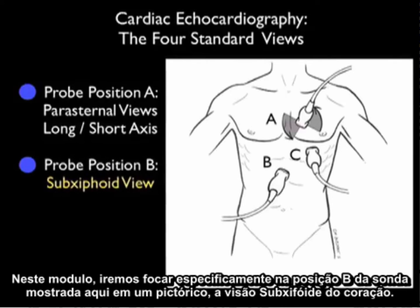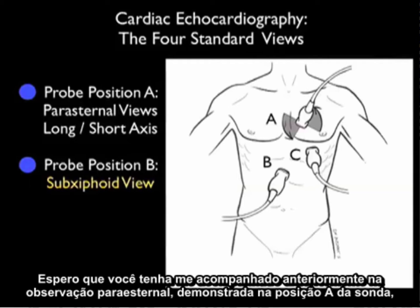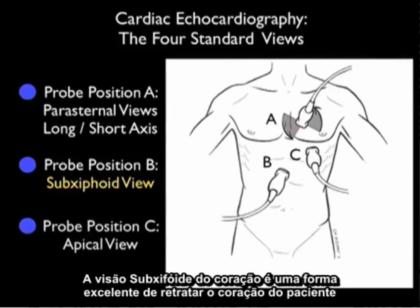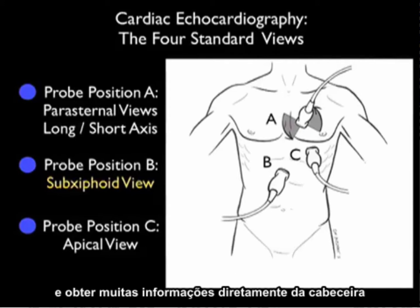In this module, we're specifically going to focus on probe position B as shown in the pictorial here — the subxiphoid view of the heart. Hopefully, you've joined me prior for the parasternal views shown in probe position A, and an upcoming module on the apical view shown in probe position C. The subxiphoid view of the heart is an excellent way of imaging the patient's heart and getting a lot of information directly at the bedside.